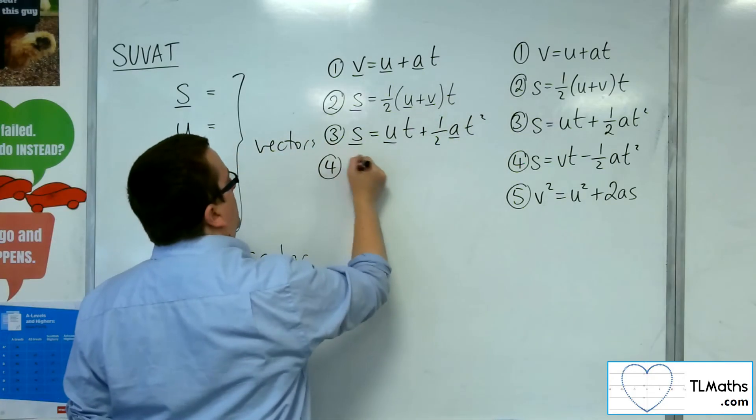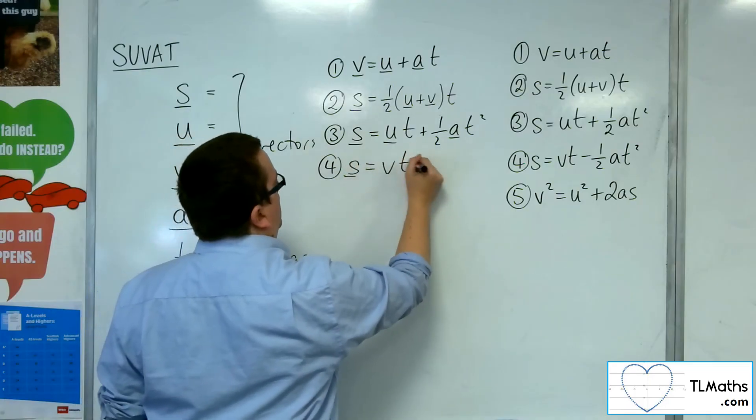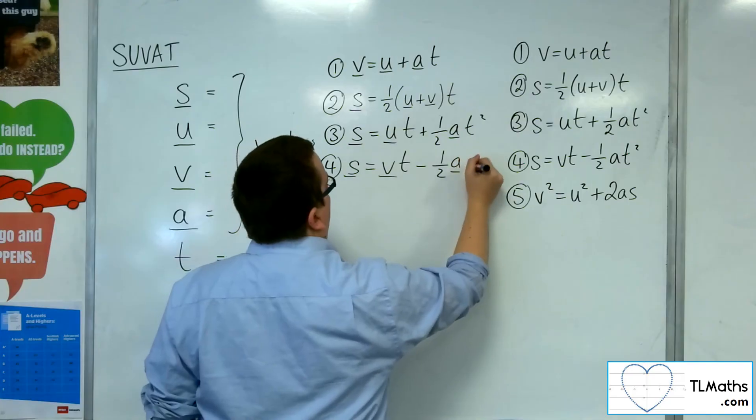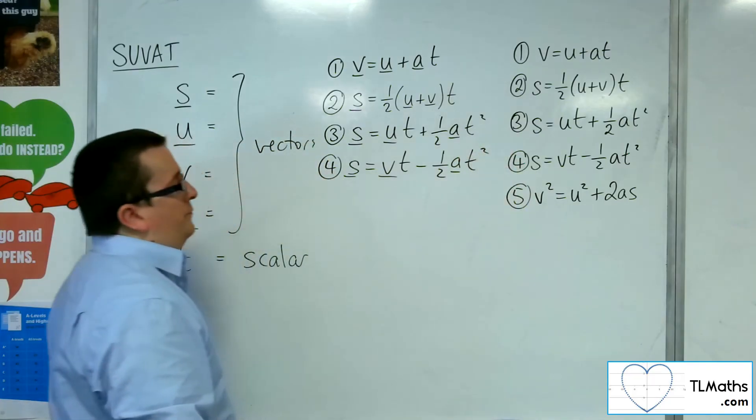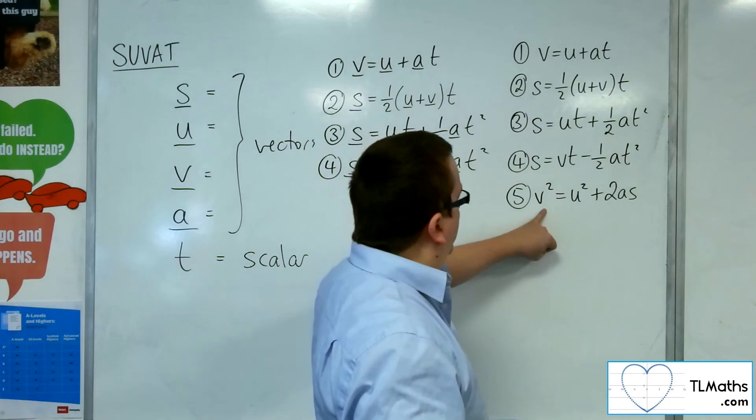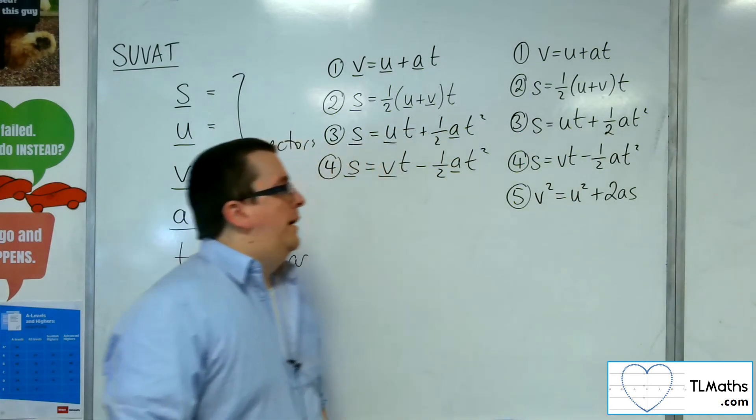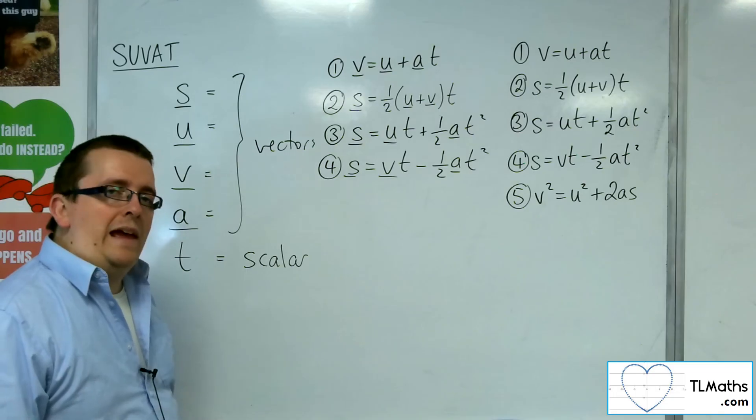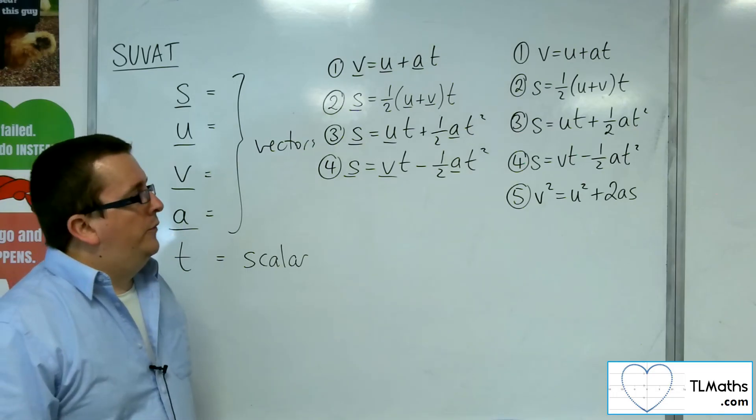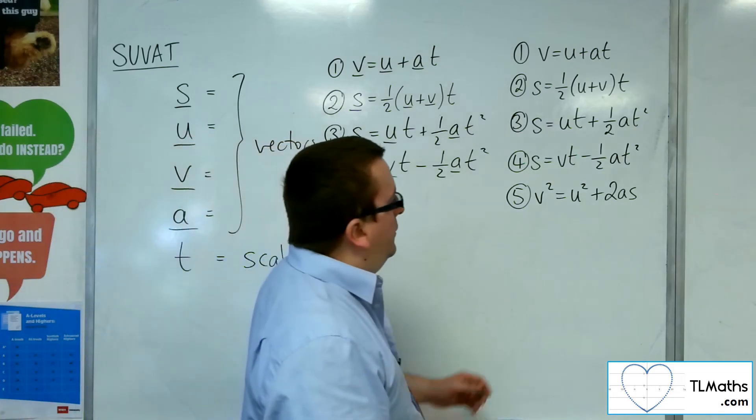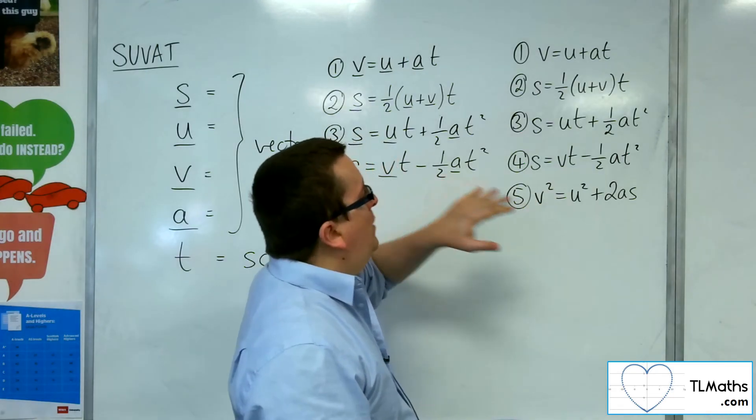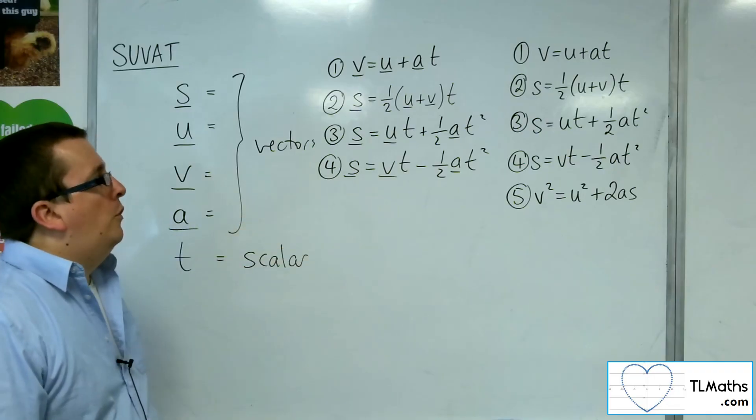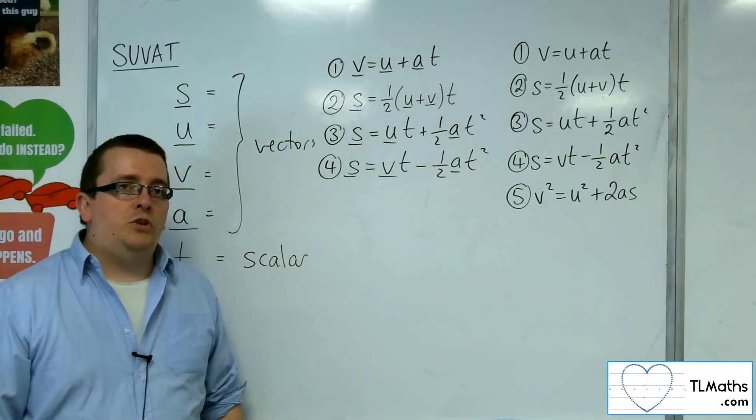And likewise, number four is equivalent. That's fine also. Now, when we get to the last one, the problem is we've got V squared and U squared. And we can't really square a vector. So that doesn't make sense. So that fifth one, we don't have a representative for it for SUVAT in two dimensions.